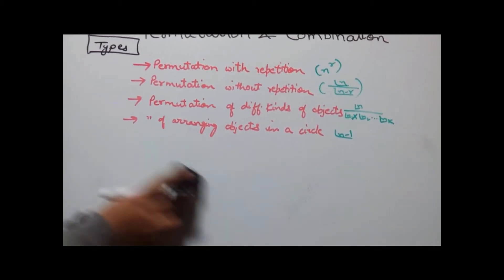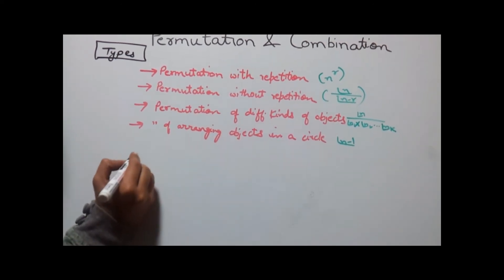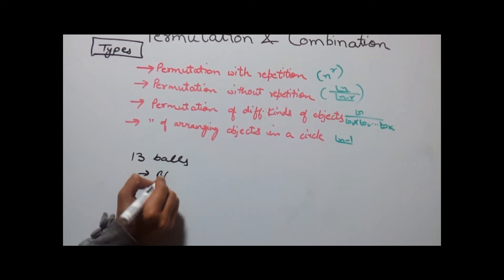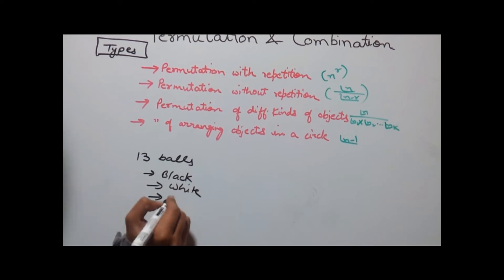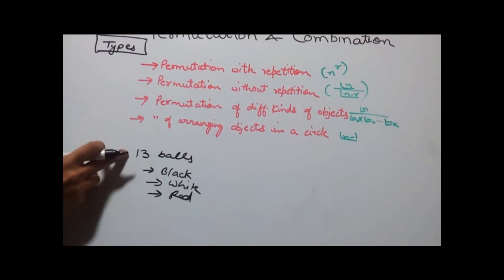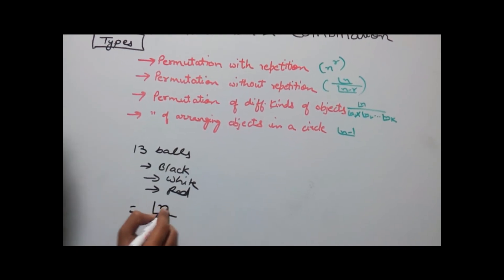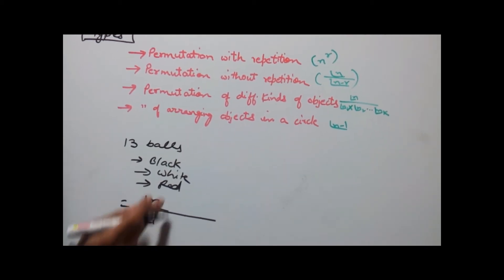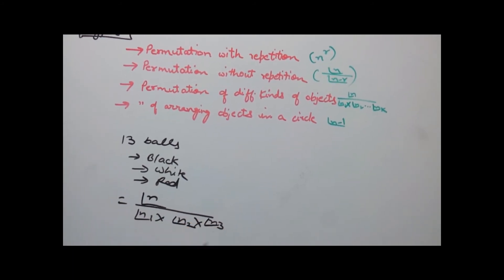Permutation of different kinds of objects: suppose you have 13 balls of which some are black, some are white and some are red. The formula for this type of permutation becomes factorial n — which represents 13 here — divided by factorial n1 (say black) times factorial n2 (say white) times factorial n3 (say red).